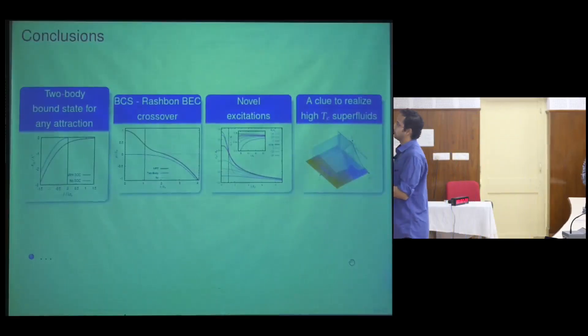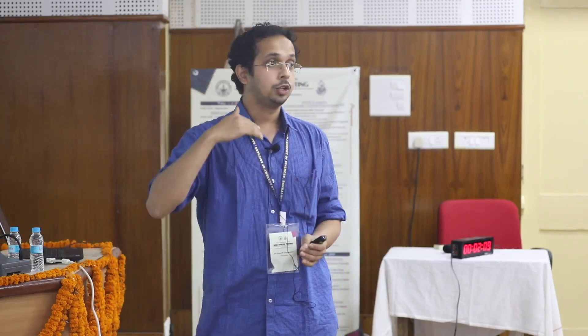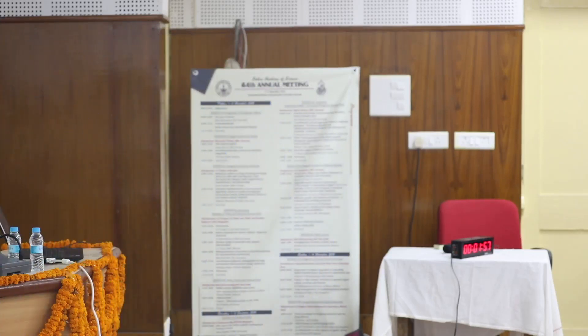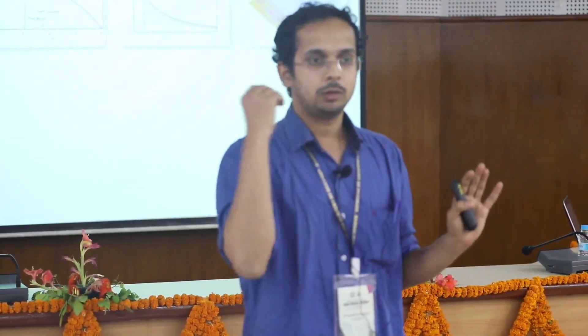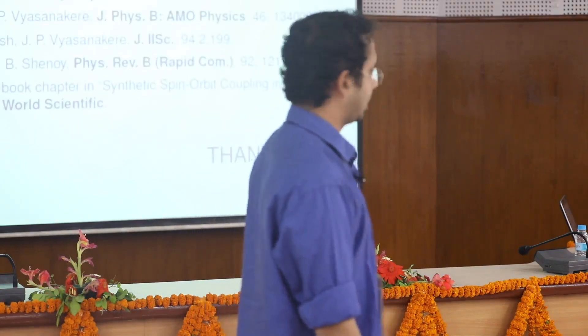In conclusion: in the two-body problem, in the presence of gauge fields, however small the attraction, a bound state forms. In the many-body problem within mean-field theory, there is a new kind of BCS-to-BEC crossover induced not by the attraction but by the gauge field. The excitations are novel, depending only on the gauge field — at large lambda they carry no information about the attraction or the fermion density. And the transition temperature increases with lambda, offering a route to high-temperature superfluidity.